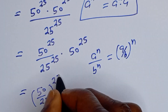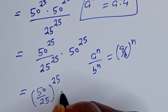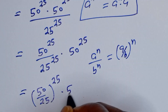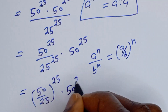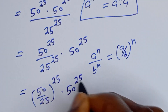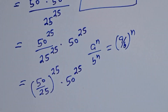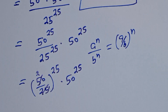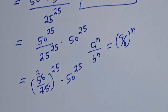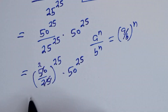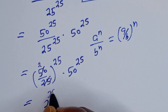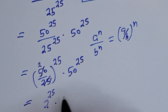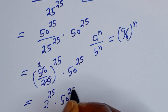Since 50 divided by 25 equals 2, this simplifies to 2 to the power of 25, multiplied by 50 to the power of 25.